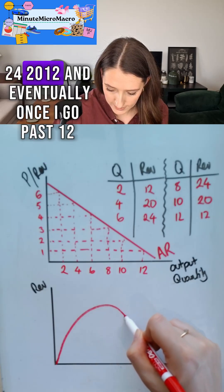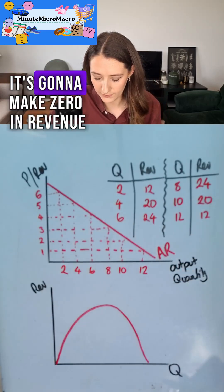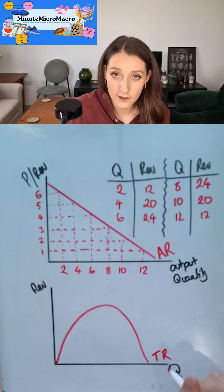24, 20, 12, and eventually as I go past 12 it's going to make zero in revenue. That's my total revenue.